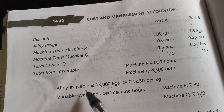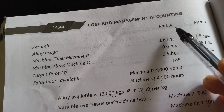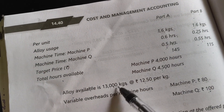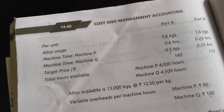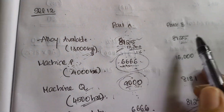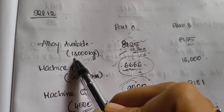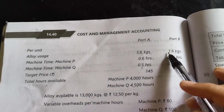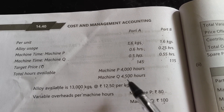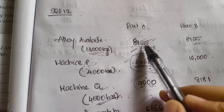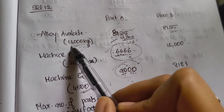The total alloy available is 13,000 kilograms. To make part A, 1.6 kilograms per unit is required. So 13,000 divided by 1.6 gives 8,125 units of part A that can be produced. For part B also, 1.6 kilograms per unit is required, so 13,000 divided by 1.6 gives 8,125 units. So 8,125 units of both part A and part B can be produced using the available alloy.